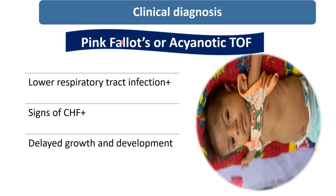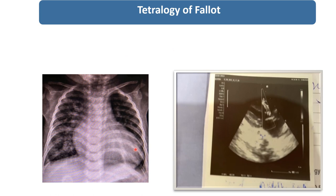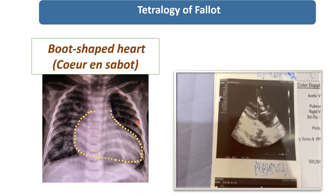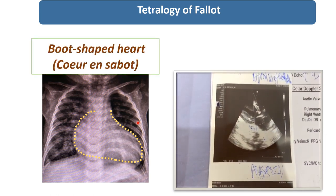Pink pellets or acyanotic TOF — as I said in the previous slides, patients of pink pellets will not develop cyanosis in the initial six months to one year of life. This is the X-ray of the child. It is characteristically showing the boot-shape heart, coeur en sabot, which is present in TOF.